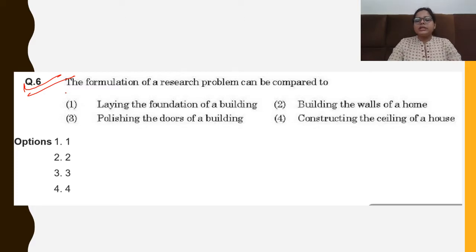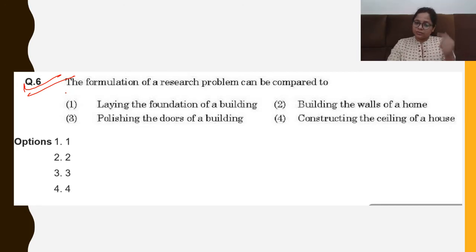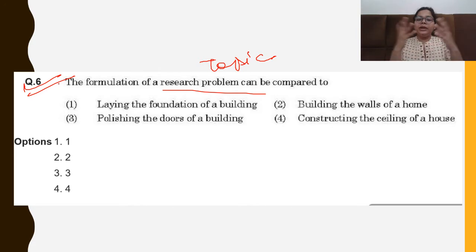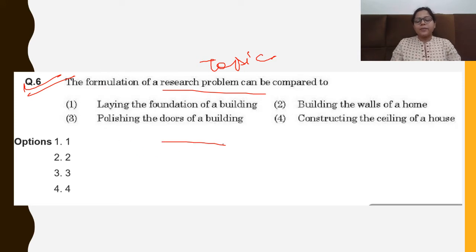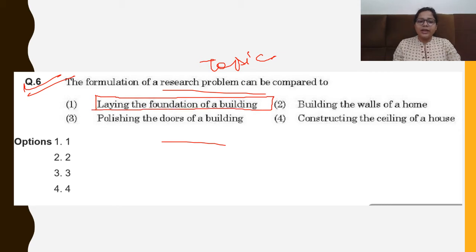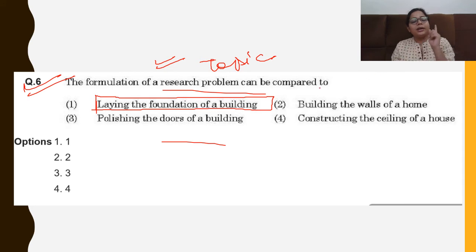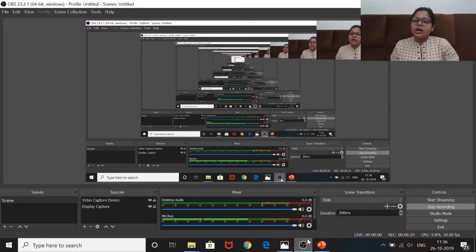Question 6 is an intellectual-level question: formulation of a research problem can be compared to what? In the research process, the very first step is formulation of a research problem — identifying the topic of research. It is compared to building construction. Options are: laying the foundation of a building, building the walls, polishing the doors, or constructing the ceiling. The correct answer is option 1 — laying the foundation — because just as formulating a research problem is the first step in research, laying the foundation is the first step in constructing a building.